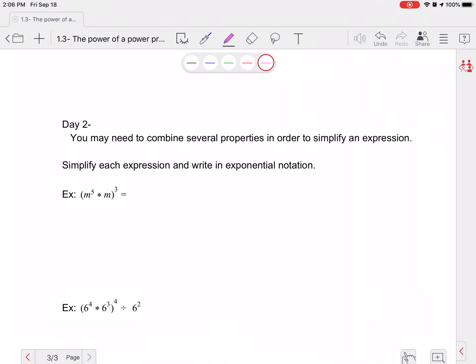So sometimes we will have to combine properties. So the product property, the quotient property, and the power to a power property. So you can do this in multiple ways.